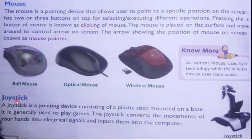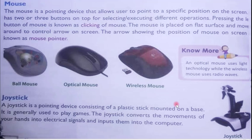Next is the joystick. A joystick is mainly used for playing games as well as in aeroplane flying. It is a pointing device consisting of a plastic stick mounted on a base. The joystick converts the movement of your hands into electrical signals and inputs them into the computer. For example, if you want to move a player to the left, you move the joystick left; it produces electrical signals that move the content accordingly.